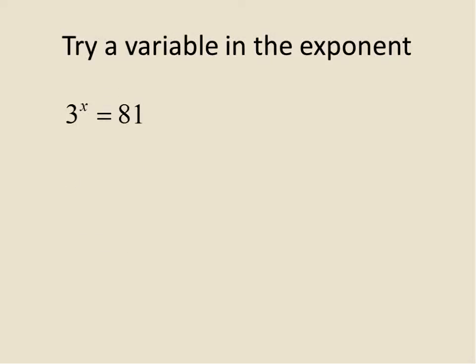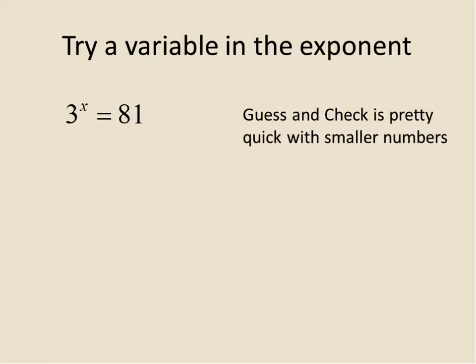The next type of question that has a variable with an exponent is when an exponent is the variable. So 3 to the power of something gives us 81. Guess and check work is pretty good with this. What I'd start out with is like 3 to the power of 1, that equals 3. 3 to the power of 2, that's 9. 3 to the power of 3, that's 27. And 3 to the power of 4, 3 times 3 times 3 times 3 gives us 81. Therefore, x, our variable, is equal to 4.